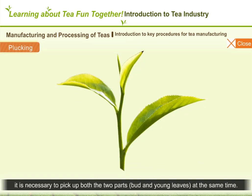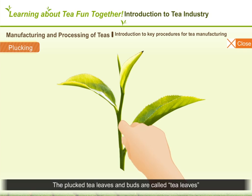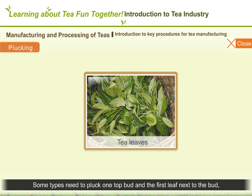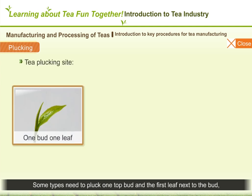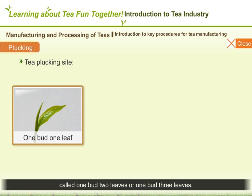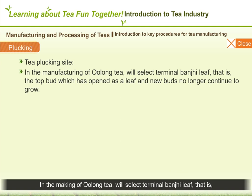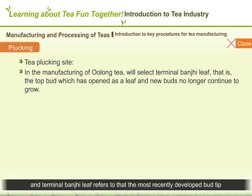When plucking tea leaves, it is necessary to pick both the bud and young leaves at the same time. The plucked parts vary depending on the tea type to be made. Some types need to pluck one top bud and the first leaf next to the bud, called one bud one leaf, and some types need to pluck one or two more leaves, called one bud two leaves or one bud three leaves. In the making of oolong tea, we select the terminal banjee leaf — that is, the top bud which has developed as a leaf and new buds no longer continue to grow.